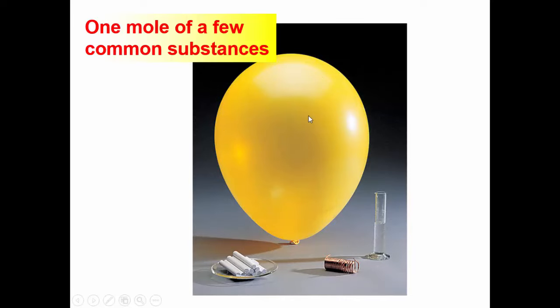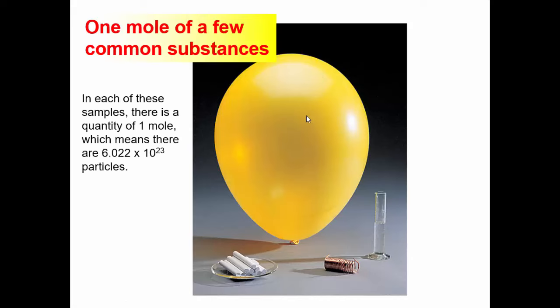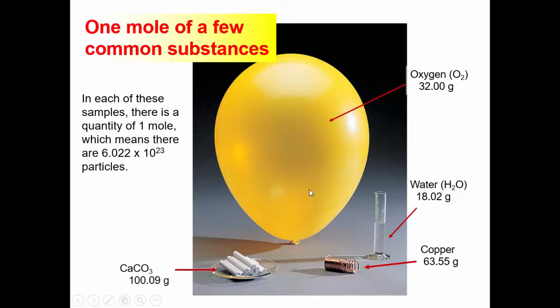We've got some oxygen, one mole of it. We've got some water, one mole of it. We've got some copper, one mole of copper. And we've got some calcium carbonate, one mole of it. So in each of these samples, there's one mole, which means that there's Avogadro's number of the component or constituent particles, molecules or atoms or repeating ionic units. In each case, we have Avogadro's number of those repeated units.